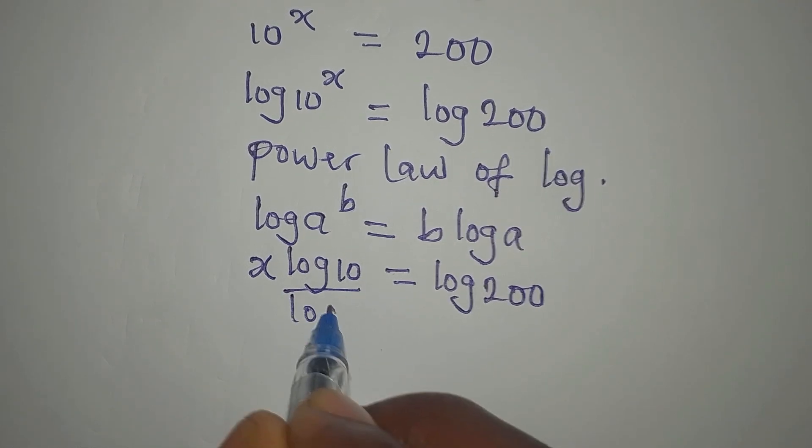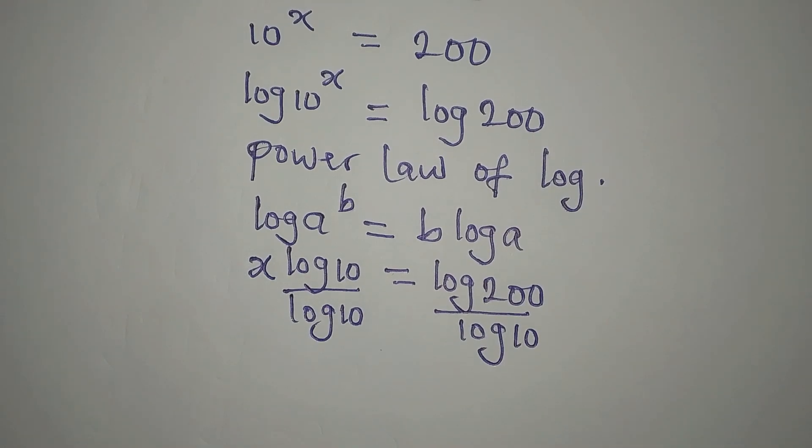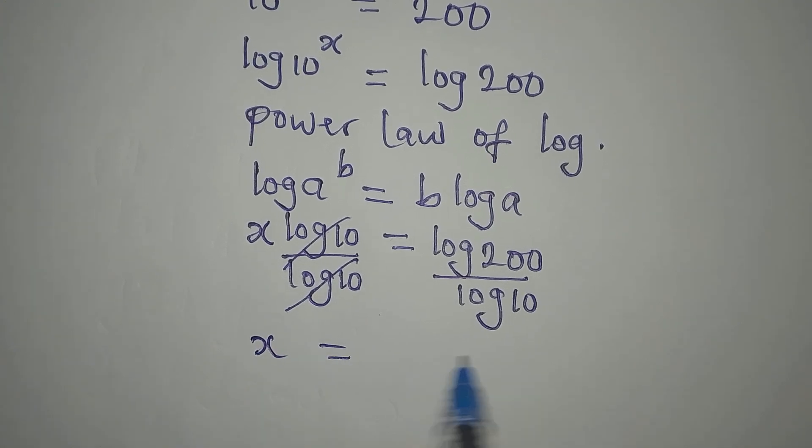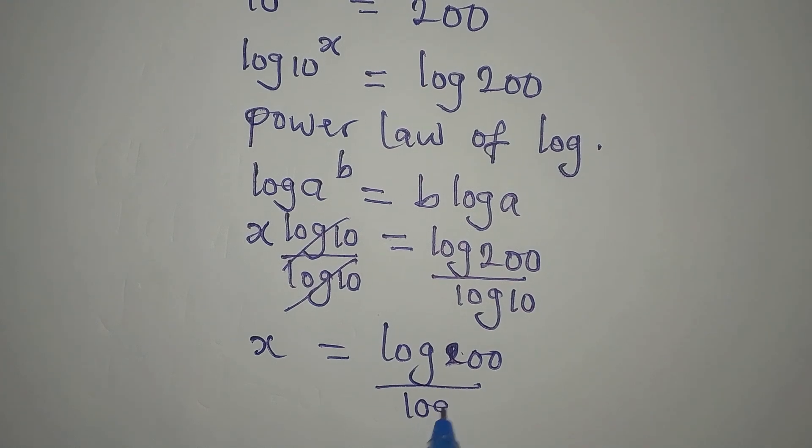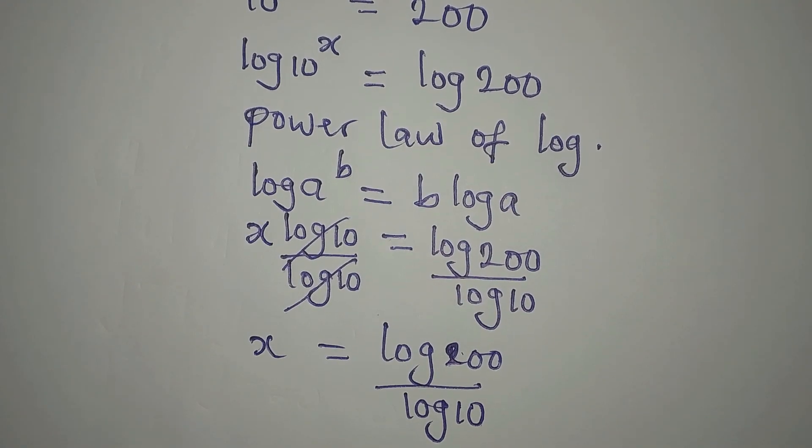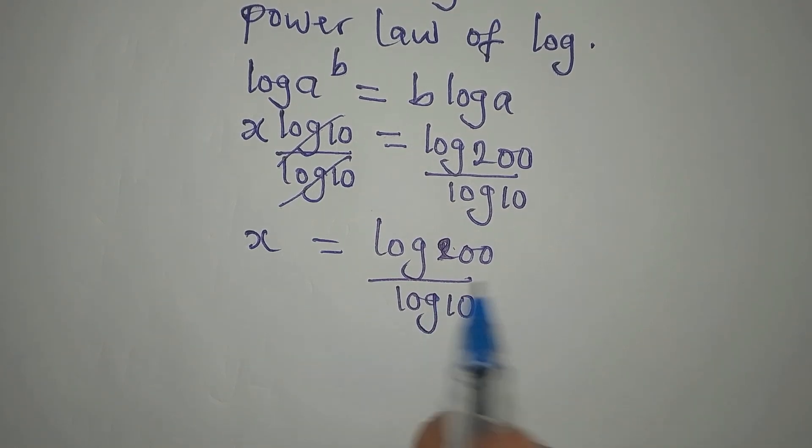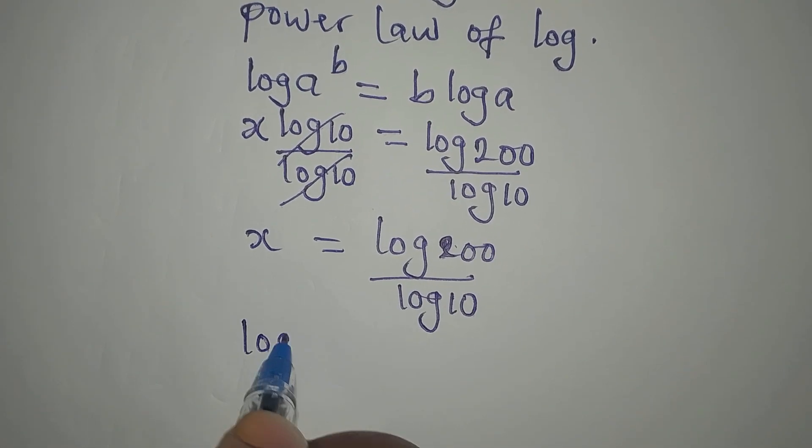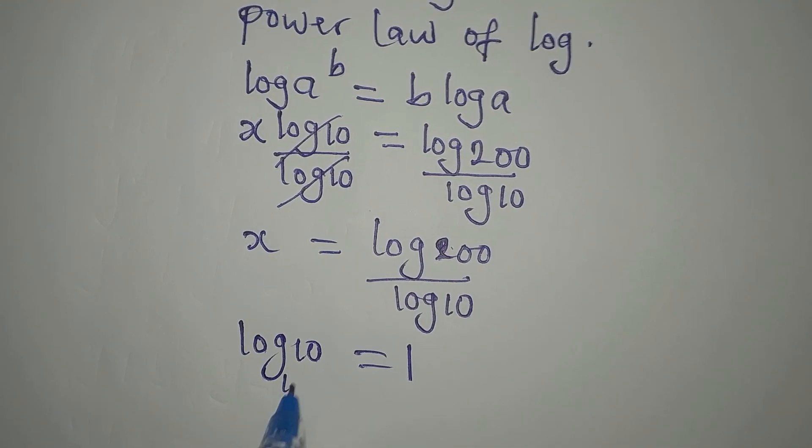Now since we are looking for the value of x, it is only right that we divide this by log 10. Then divide this by log of 10. This will go with this, so x will be equal to log 200 over log 10.